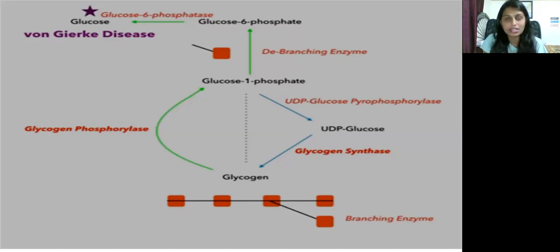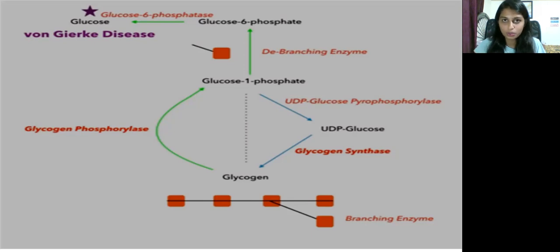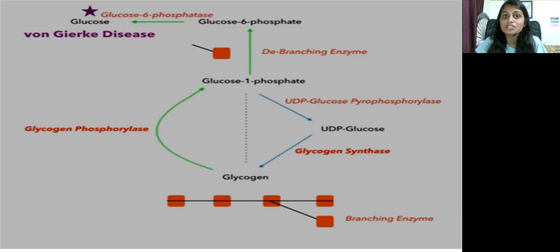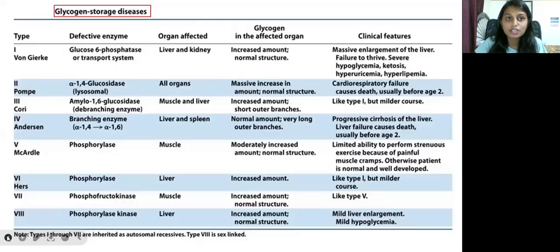In glycolysis, 6-carbon glucose is converted into two 3-carbon pyruvates. But when there is no glucose in our body, our body needs energy. Glucose has to be transported in our blood for ATP production. During fasting or emergency conditions, glycogen present in our body breaks down into glucose to provide energy. This breakdown requires several enzymes, and when there is an enzyme deficiency, glycogen storage diseases occur — that is what glycogen storage diseases are.